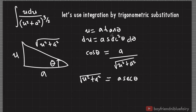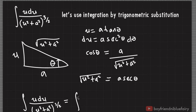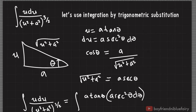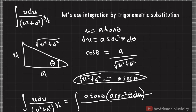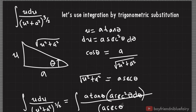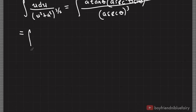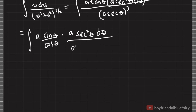I now have trigonometric expressions to substitute in this integral. Let me plug this in: the integral of u du divided by quantity u squared plus a squared raised to 3 halves is equal to the integral of u, which is a tangent theta, times du, which is a secant squared theta d theta, divided by — this is our expression for square root of u squared plus a squared, raised to the 3rd power because this integral is raised to 3 halves. So, I have the integral of a times tangent theta — tangent is equal to sin theta over cosine theta — times a secant squared theta d theta, divided by a cubed times secant cubed theta.